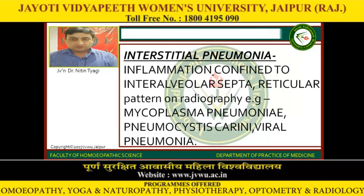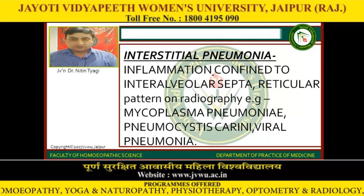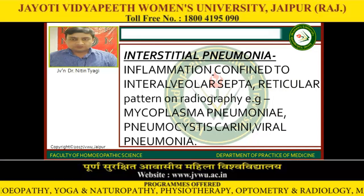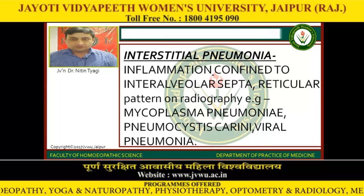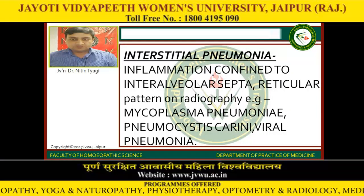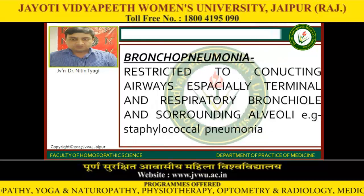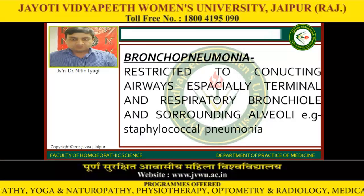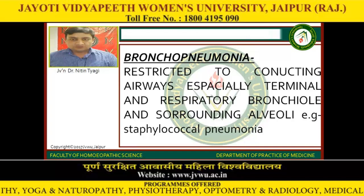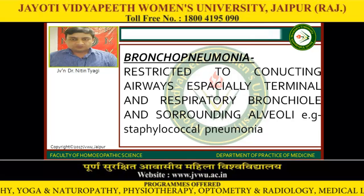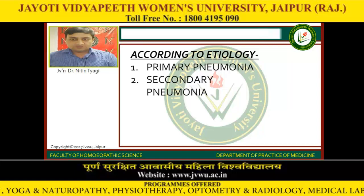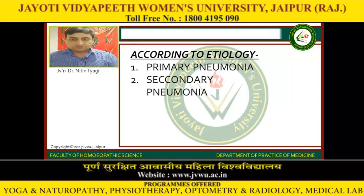Interstitial pneumonia: there is inflammation confined to intra-alveolar septa, with a reticular pattern on radiograph. Examples include Mycoplasma pneumoniae, Pneumocystis carinii, and viral pneumonia. Bronchopneumonia is restricted to conducting areas, especially terminal and respiratory bronchioles and surrounding alveoli. Example: Staphylococcal pneumonia.